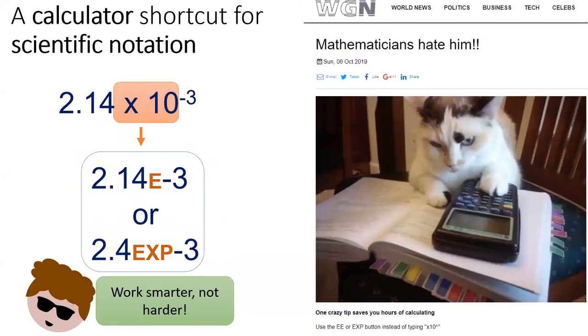Lastly, a tip from a pro. Your calculator has a button which represents times 10 to the power. In most calculators, the button is labeled with a capital E or EE. I really recommend finding and using this button. It will save you a lot of time when you're calculating with scientific notation, which in this class will be often.